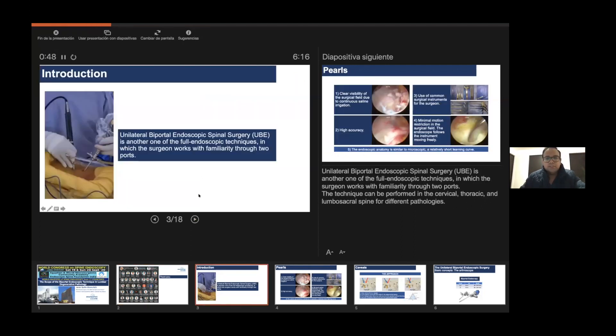As introduction, biportal endoscopic spinal surgery, or the so-called UBE technique, is another one of the full endoscopic techniques in which the surgeon works with familiarity through two ports. The technique can be performed in cervical, thoracic, and lumbosacral spine for different pathologies.